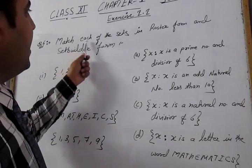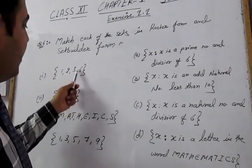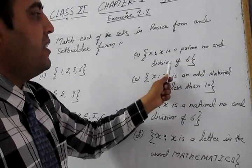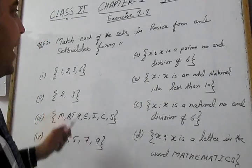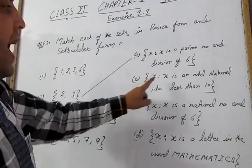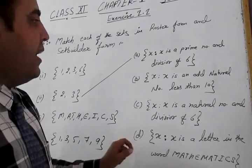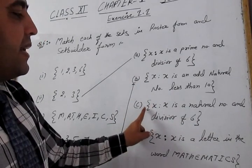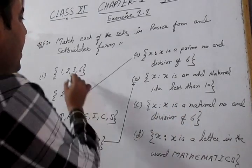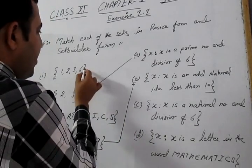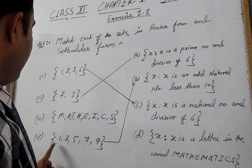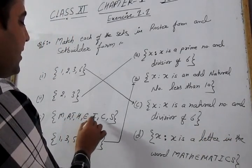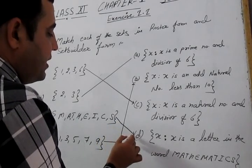Question 6: Match each set in roster form with its set builder form. First: x such that x is a prime number and divisor of 6 — the prime divisors of 6 are 2 and 3, so this matches set (ii). Second: x such that x is an odd natural number less than 10 — that gives {1, 3, 5, 7, 9}, matching (B). Third: x such that x is a natural number and divisor of 6 — that gives {1, 2, 3, 6}, matching (C). Fourth: x such that x is a letter in the word 'mathematics' — that gives {M, A, T, H, E, I, C, S}, matching (D).